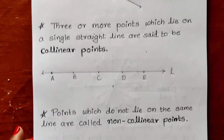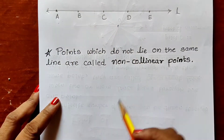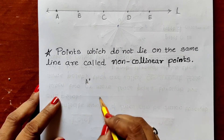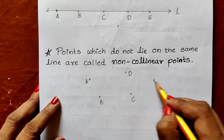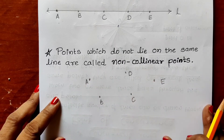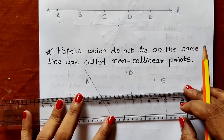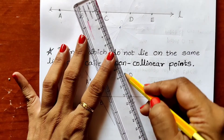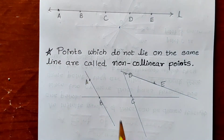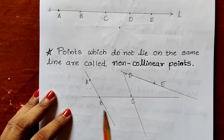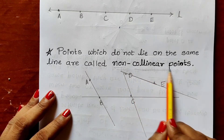Non-collinear means points which do not lie on the same line. If I plot points A, B, C, D, E in different positions, we cannot draw a single line passing through all five points. We have to draw different lines — from A and B one line, from B and C a second line, from D and E another. So these points A, B, C, D, E are not in the same line and that is why they are known as non-collinear points.